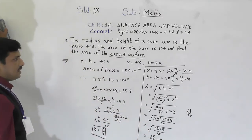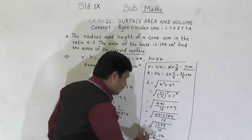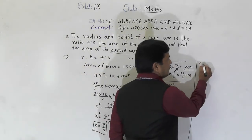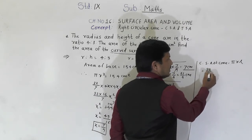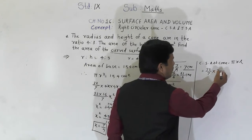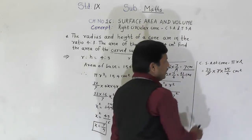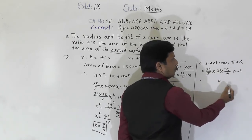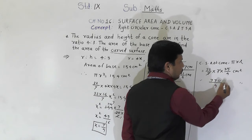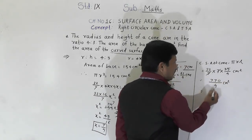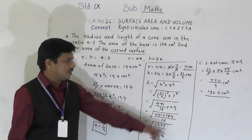Now we have slant height, so we can easily find curved surface area. CSA of cone equals pi r l equals (22/7) × 7 × (35/4). The 7s cancel, giving 22 × 35 / 4 = 770/4 = 192.5 cm². So 192.5 cm² is our curved surface area.